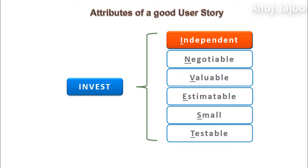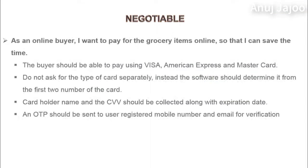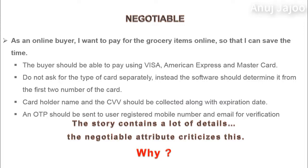The next attribute is Negotiable. This is a little difficult to understand. Consider this story written during the initiation phase: As an online buyer, I want to pay the grocery items online so that I can save the time. The buyer should be able to pay using Visa, American Express, and MasterCard. The software should determine the card type from the first two numbers. The card holder name, CVV, expiry date should be collected, and an OTP should be sent using the registered mobile number and email for verification. So the story contains a lot of details.